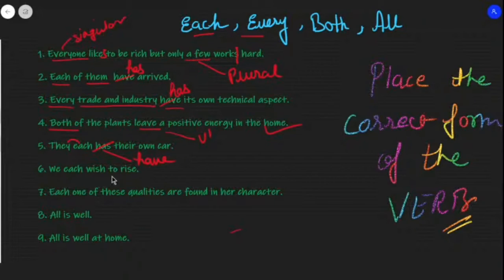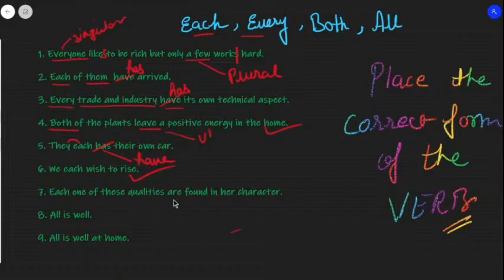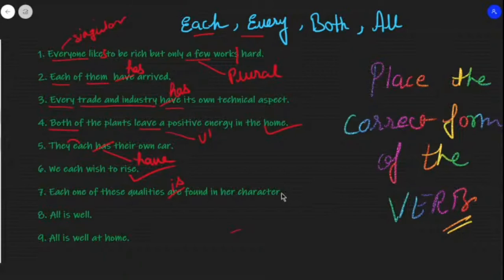'We each wish to rise' — this is also a correct sentence, using plural verb 'wish' because 'we' comes before 'each.' Then: 'Each one of these qualities is found in her character' — here 'each one' governs the singular verb 'is.'